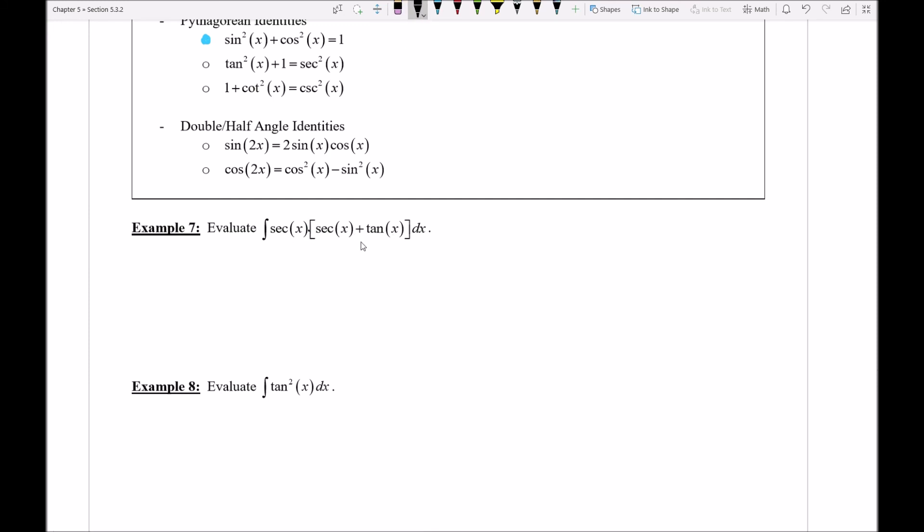That's not okay, it's not a derivative rule that I'm undoing, but what I could notice maybe right away is that I do have a product here, and so I could go ahead and maybe start by distributing this front value of the secant of x, at least just to see what happens.